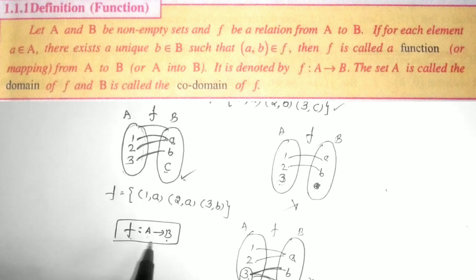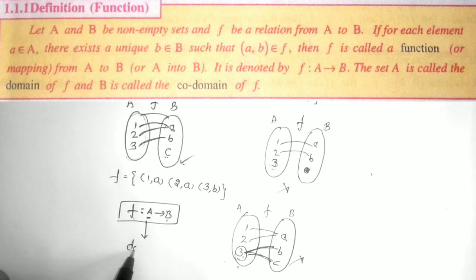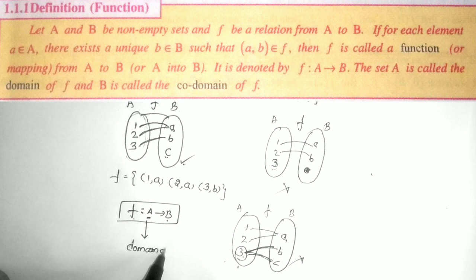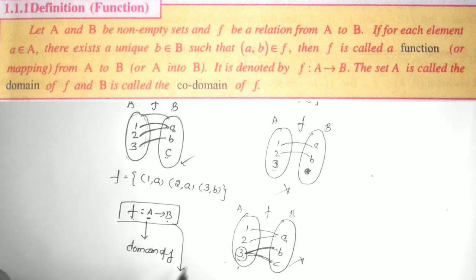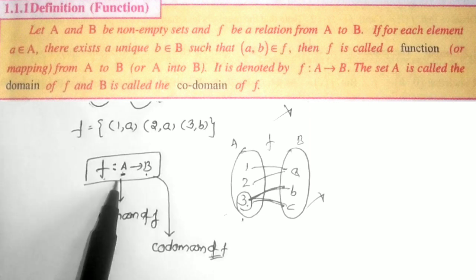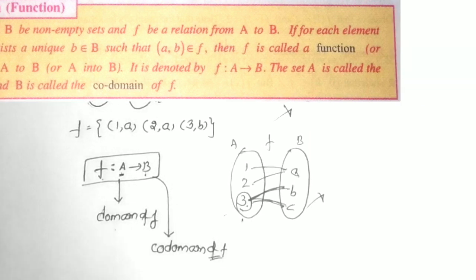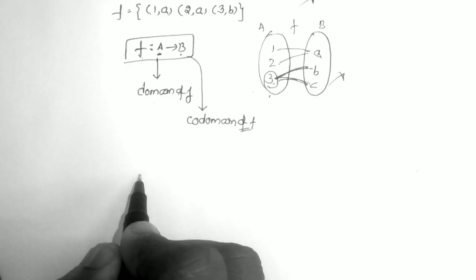So the first set A is called the domain of F and the second set B is called the co-domain of F. Now the next definition.